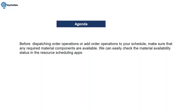The material availability features are available in the resource scheduling app. So how it will work — whatever functionality is going to be triggered in plant maintenance order and how you can manage it in the resource scheduling app, we will see it here.